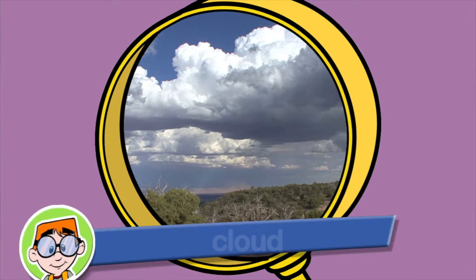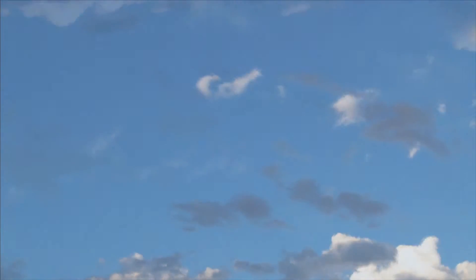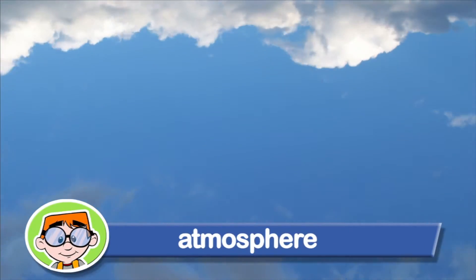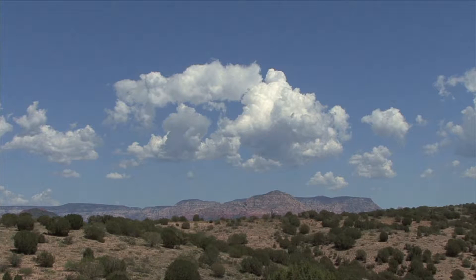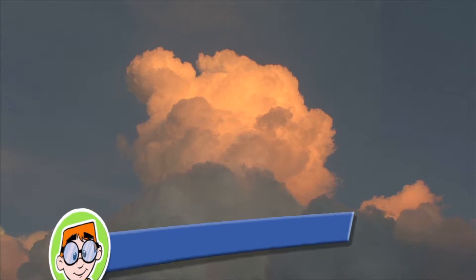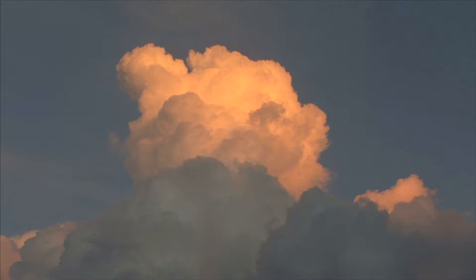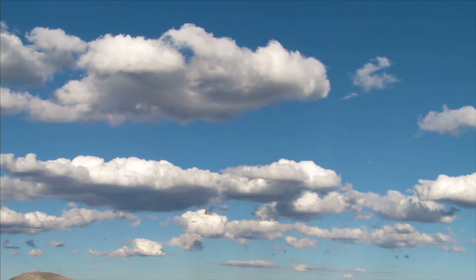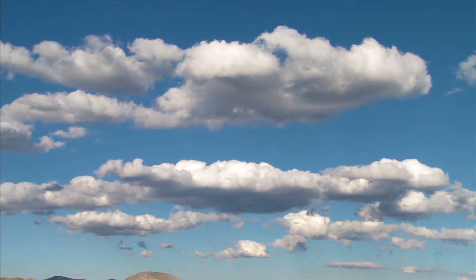A cloud is made up of very tiny droplets of water or ice crystals. The droplets are so small and light that they can float in the air. Clouds float in the earth's atmosphere. There are different kinds of clouds. Some clouds, called cumulus clouds, are puffy white and appear in the sky on bright sunshiny days. These clouds are white because they reflect the light of the sun. They are not rain clouds.